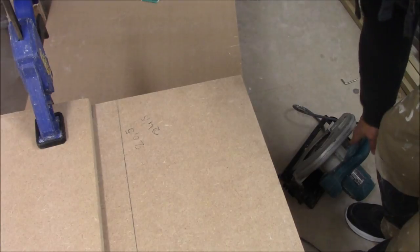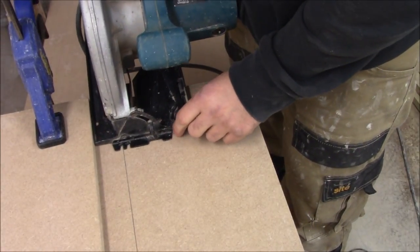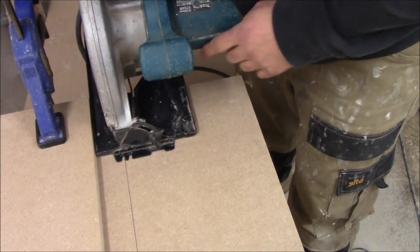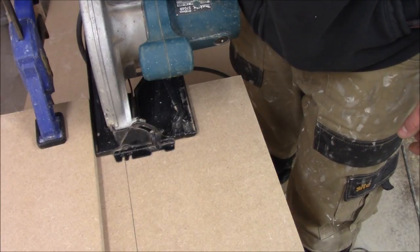We can also check if this is the right distance by putting the circular saw here, checking the blade when it's going to cut. Everything's fine, so we need to start cutting.